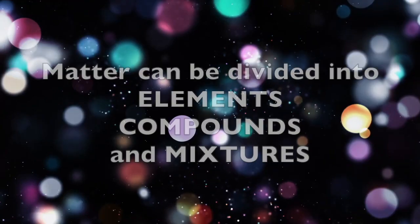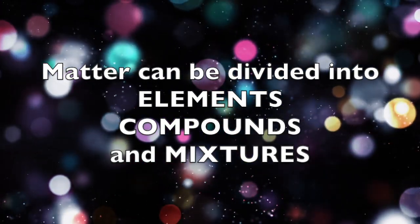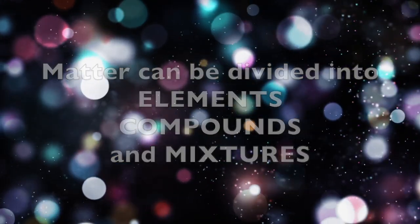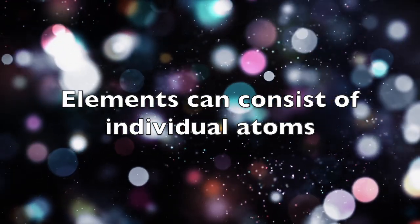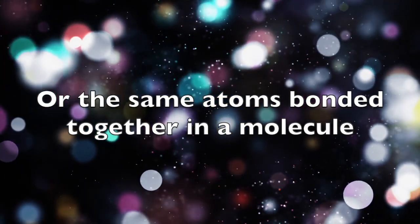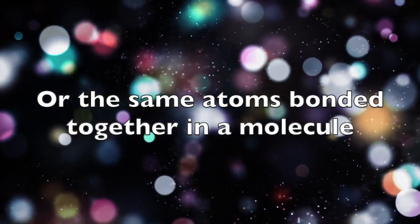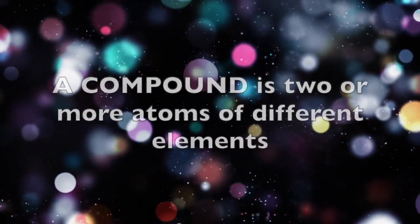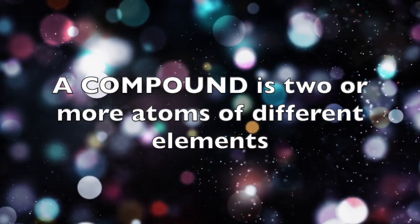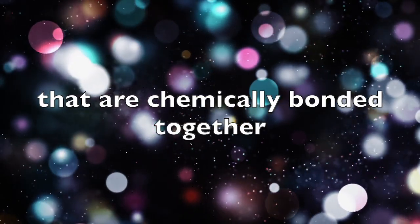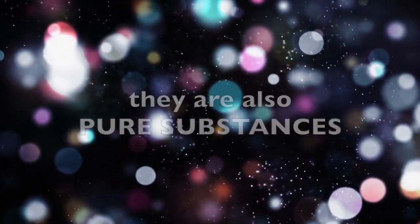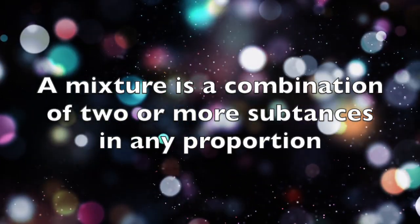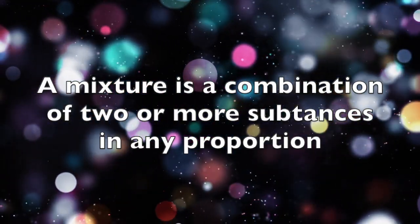In summary, matter can be divided into elements, compounds, and mixtures. Elements can consist of individual atoms or the same atom bonded together in a molecule. Elements are pure substances. A compound is two or more atoms of different elements that are chemically bonded together — it is also a pure substance. A mixture is a combination of two or more substances in any proportion.